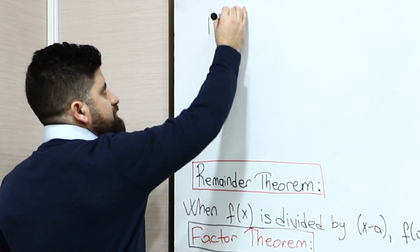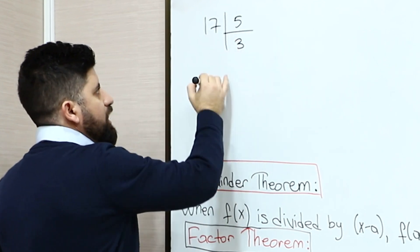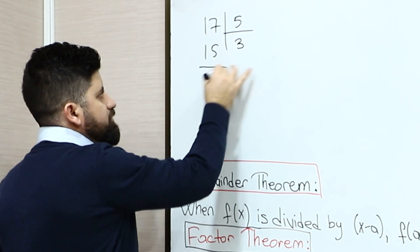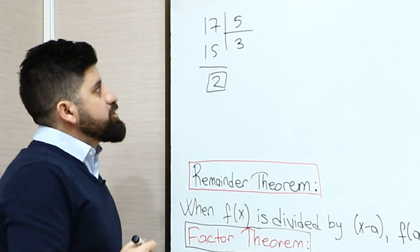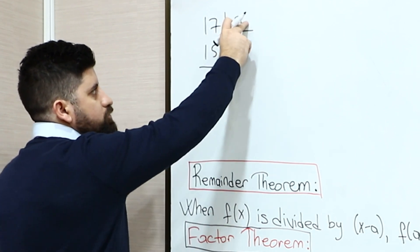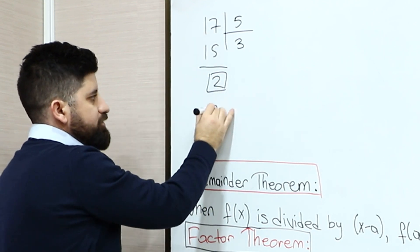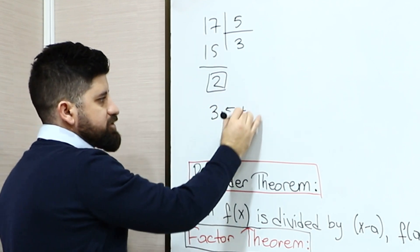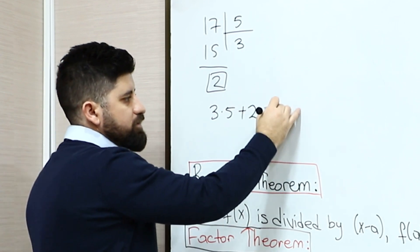So let's take 17 divided by 5, which we get the quotient as 3 and the remainder as 2. So when we do inverse operation by multiplying the quotient to divisor and adding remainder, we will get 17, which means that 3 multiply 5 plus 2 is equal to 17.